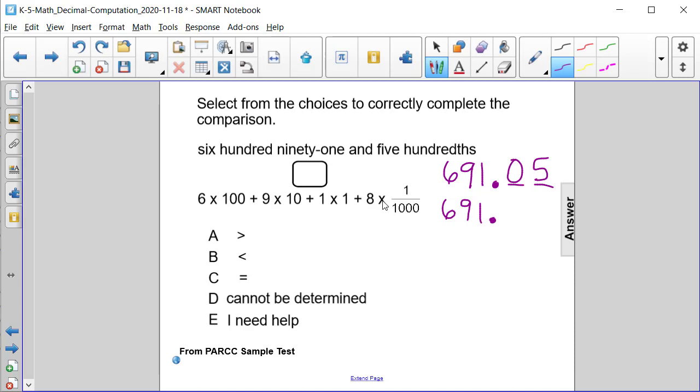We only have 8 times 1 thousandth, so you're going to have 8 thousandths, which is three places after the decimal point, and we just have an 8 there. So we need to stick zeros in both the tenths and hundredths places.